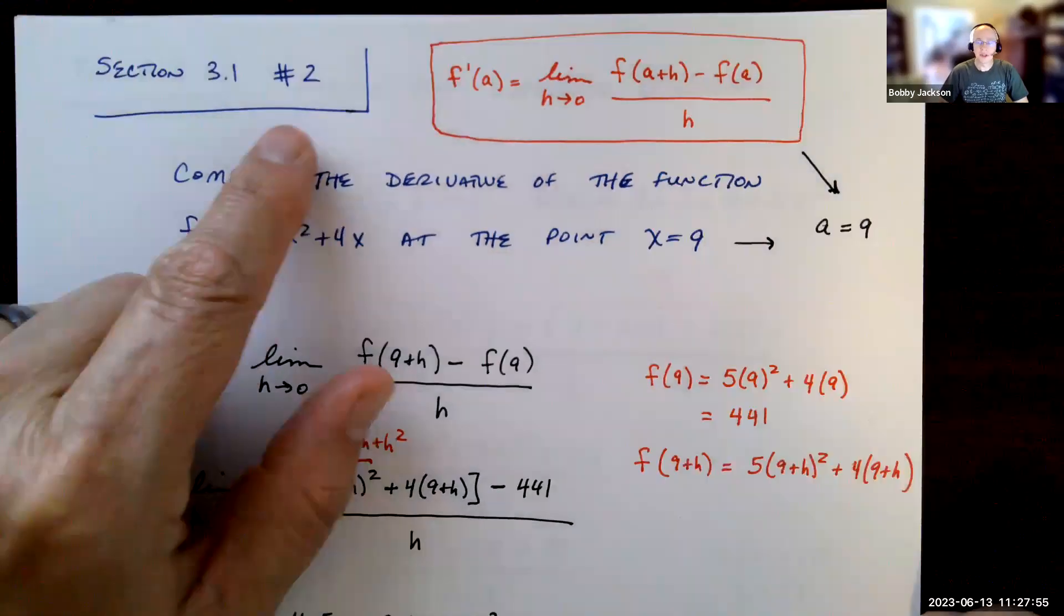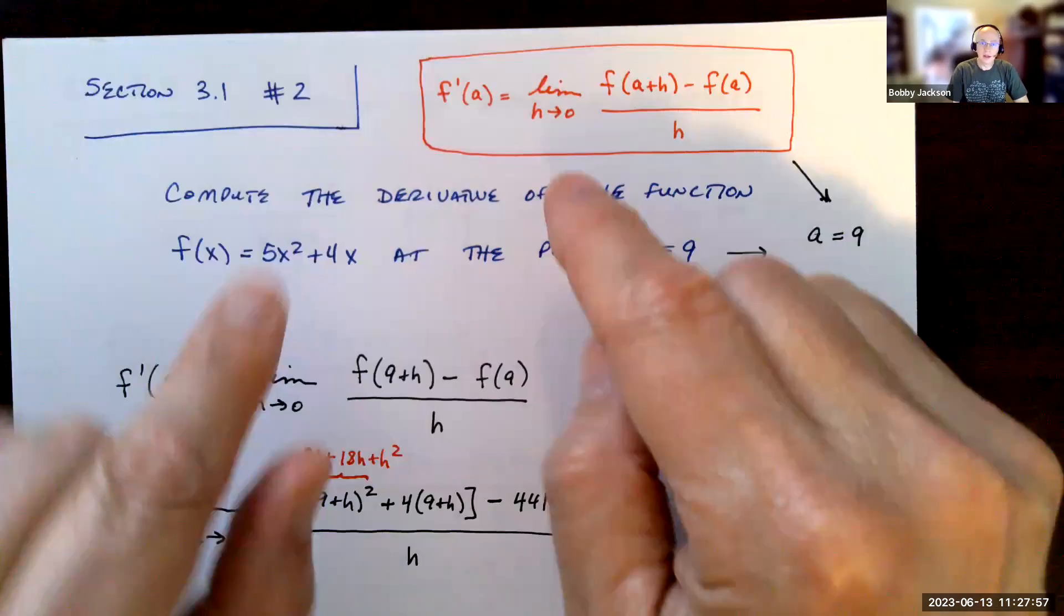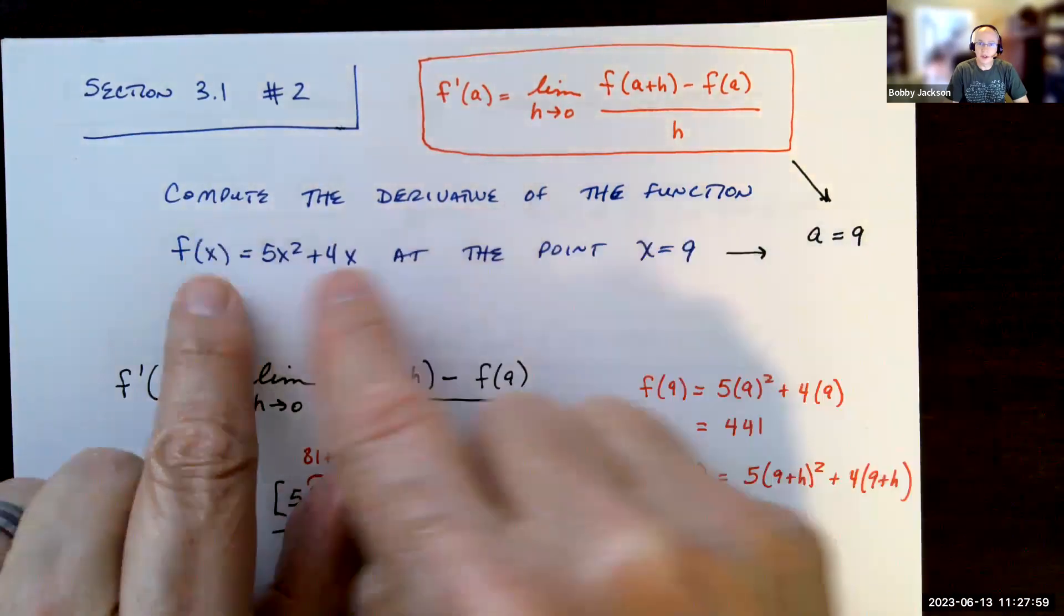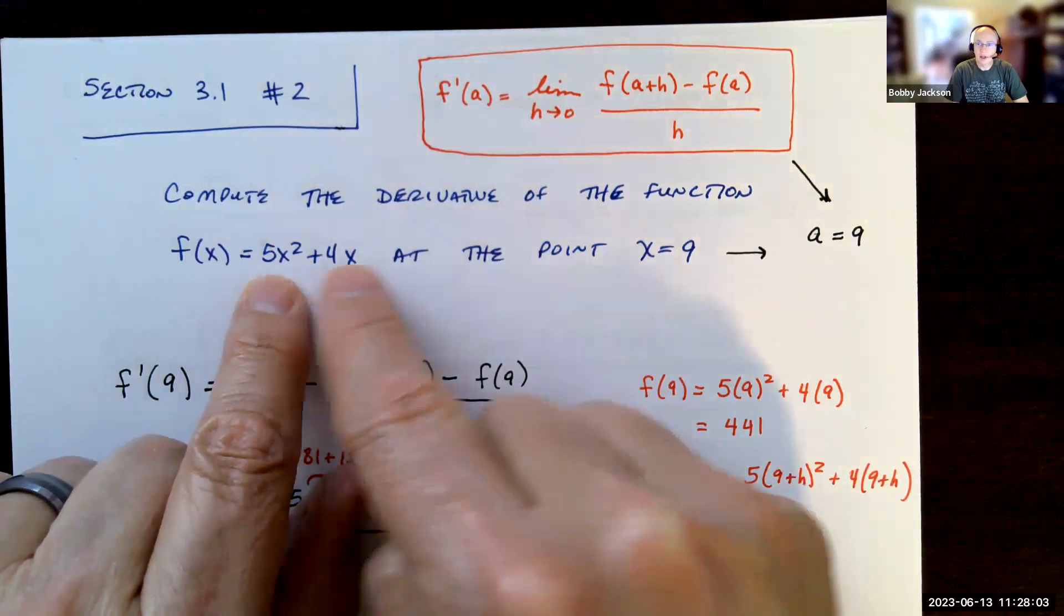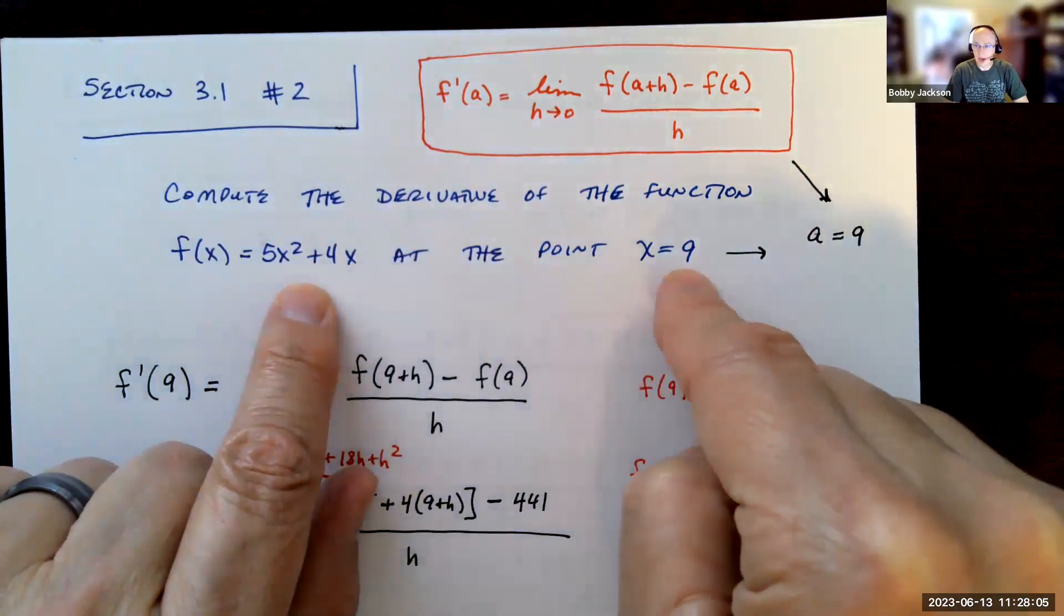Okay, we're going to look at number two in section 3.1 and work to compute the derivative of the function f(x). This should be similar to the function you have at the point x equals nine.